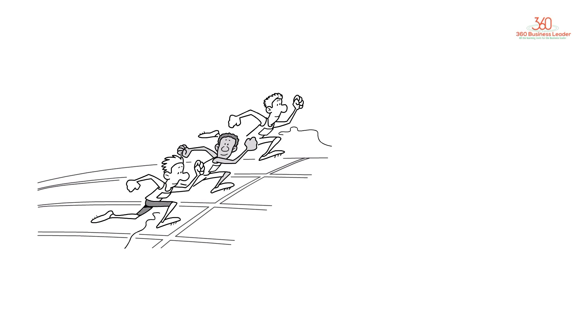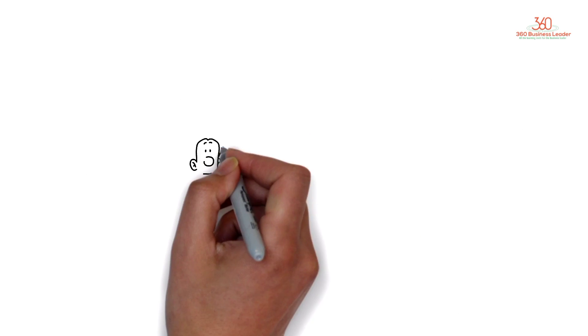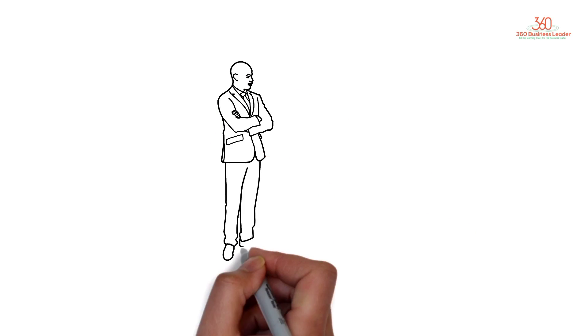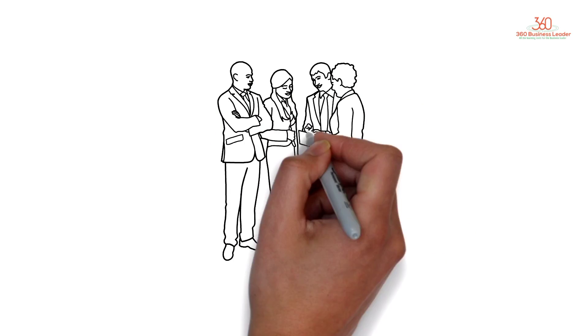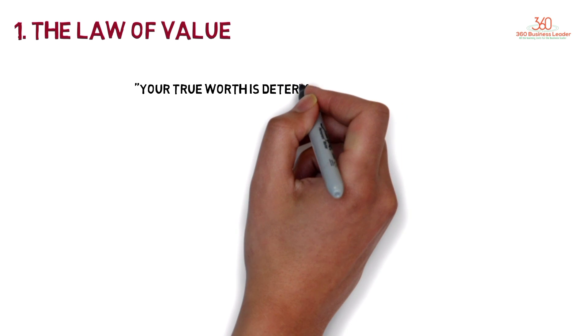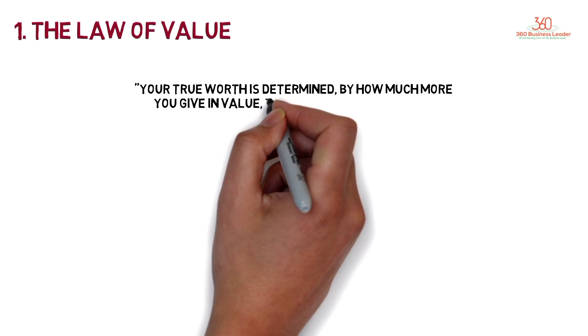Most of us see the world as a place of limitation rather than inexhaustible treasures, a world of competition rather than co-creation. What you focus on is what you get. Ultimately, the world treats you more or less the way you expect to be treated. The five laws of stratospheric success: First Law - the Law of Value. Your true worth is determined by how much more you give in value than you take in payment.